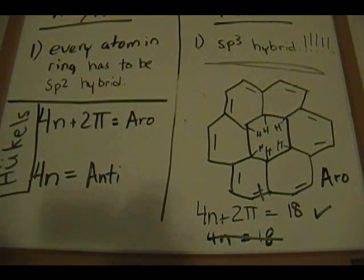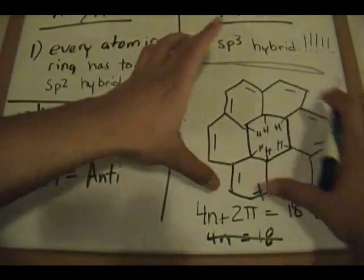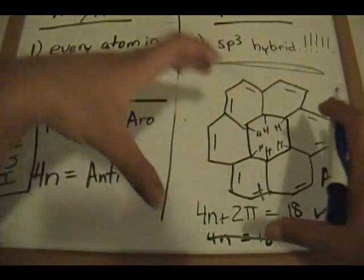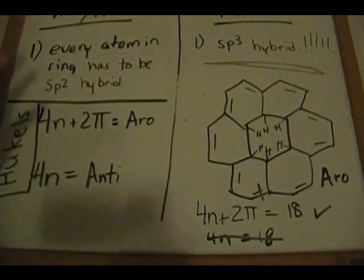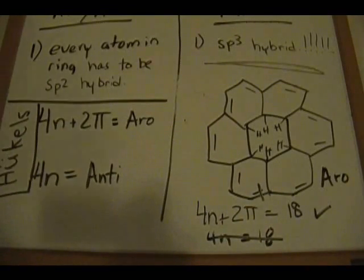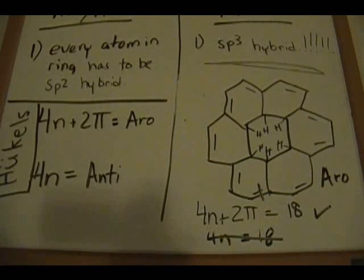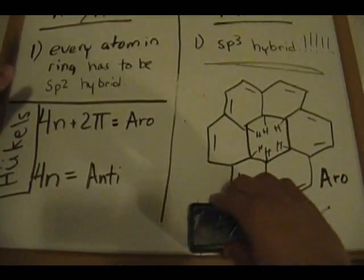This molecule is aromatic. The key rule is: if you can find a piece — on really any type of structure — whether it's a small piece or a large piece that is aromatic, that makes the whole thing aromatic, regardless of whether there are sp3 hybridized atoms present.